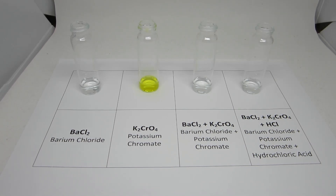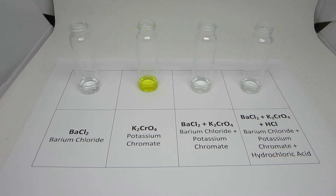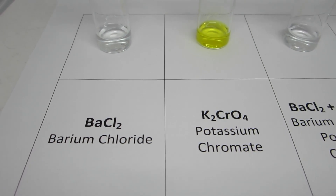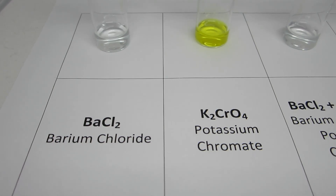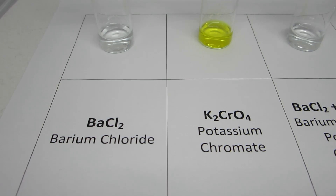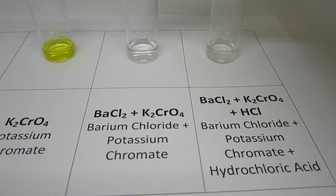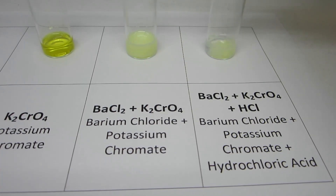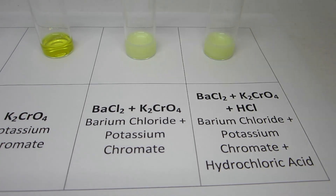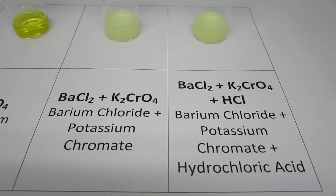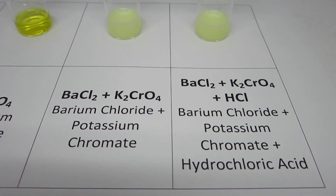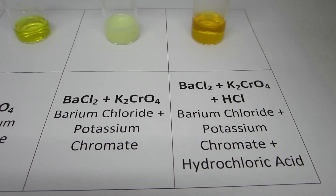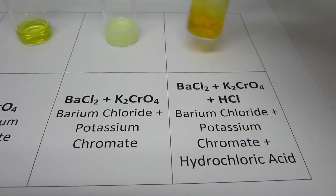The second equilibrium reaction to investigate is the precipitation reaction of barium chromate. The initial reactants appear as a yellow potassium chromate solution and a clear and colorless barium chloride solution. Upon mixing, the dull pale yellow precipitate of barium chromate is formed. With the precipitate formed, the addition of hydrochloric acid causes the precipitate to dissolve and the solution to appear a golden orange color.